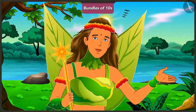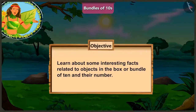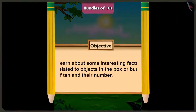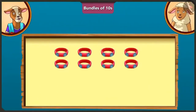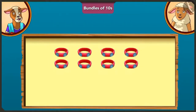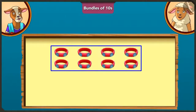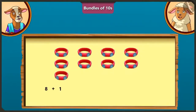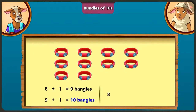Today, we will learn about some interesting facts related to objects in the box or bundle of tens and their number. Lily, if I have eight bangles, how many bangles would I have to add so I would have ten bangles? On adding one to eight, we get nine. By adding one to nine, we get ten. So, we will have ten bangles by adding two bangles to eight. Well done, Lily.